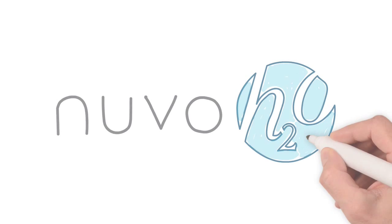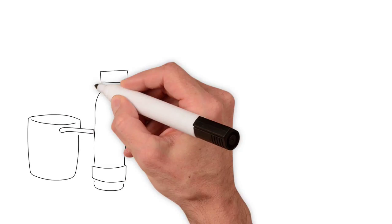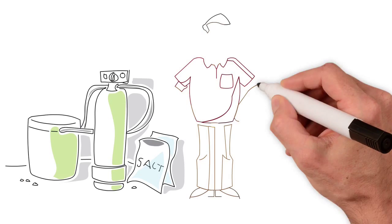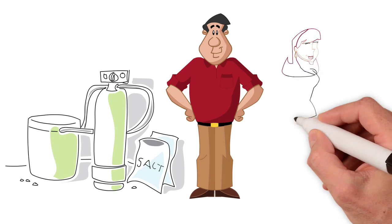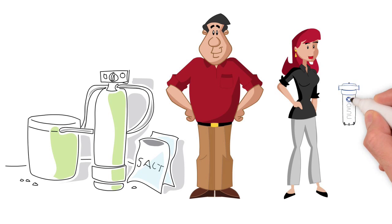Nuvo H2O is unlike any water softening system on the market. Forgoing the traditional method of using salt, Nuvo H2O uses citrus to make water softening convenient, compact, and cost-effective.